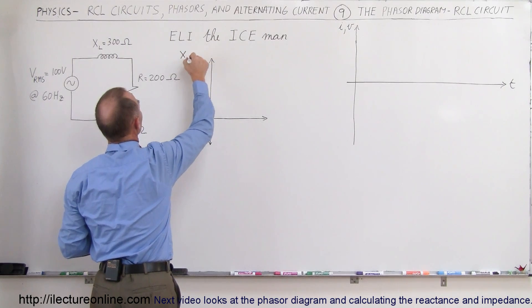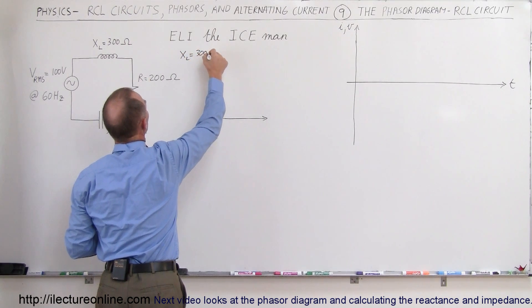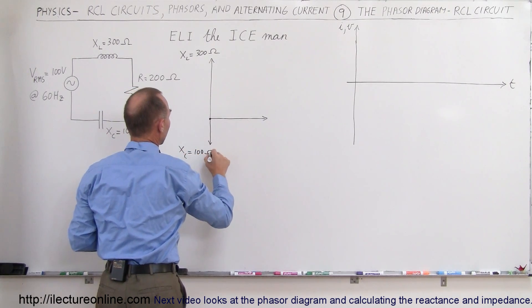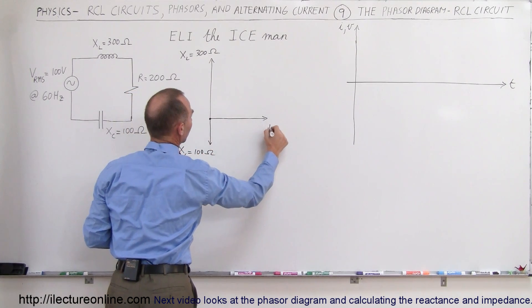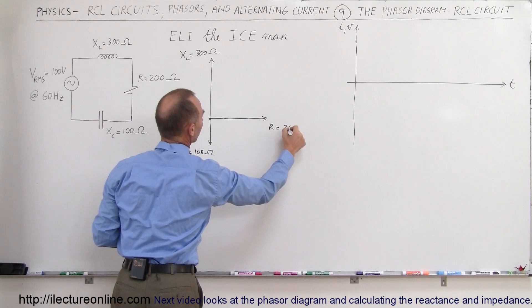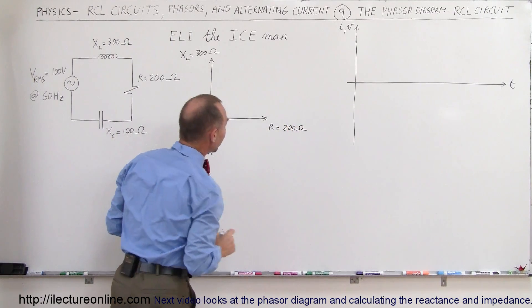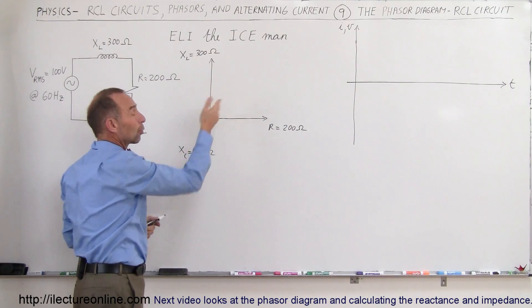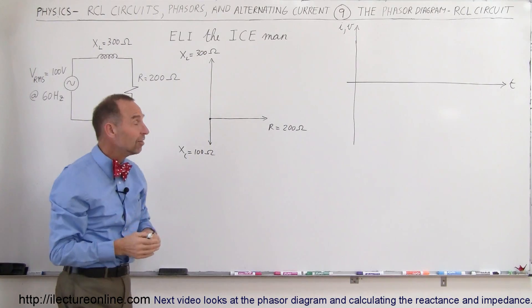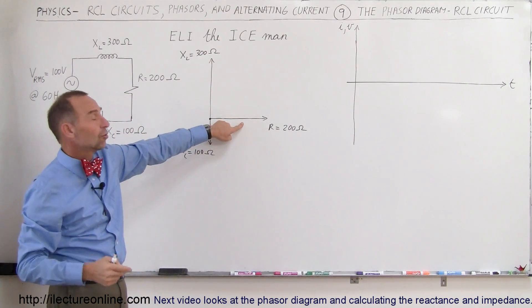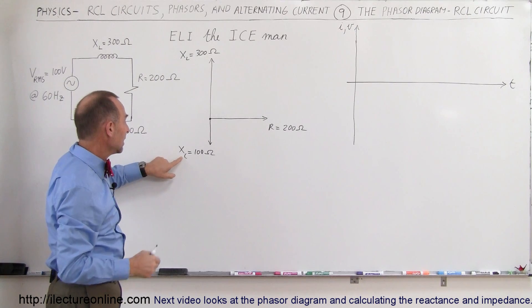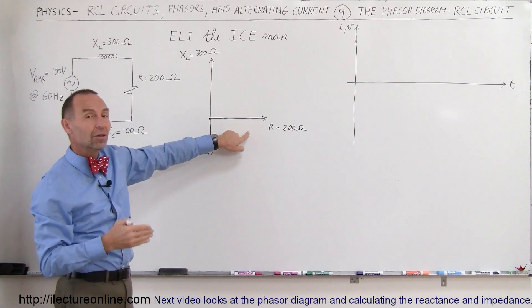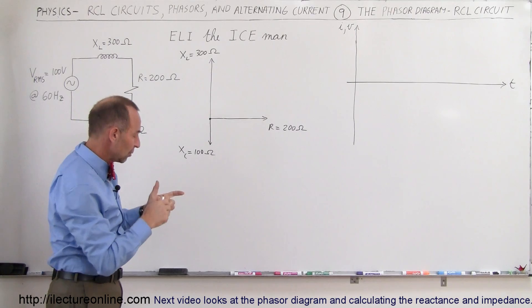So X sub L equals 300 ohms, X sub C equals 100 ohms, and resistance equals 200 ohms. You can see that the reactance of the inductor acts 90 degrees — a quarter of a phase — before the resistance opposes the current, and the capacitor is 90 degrees behind the opposition of the resistor.